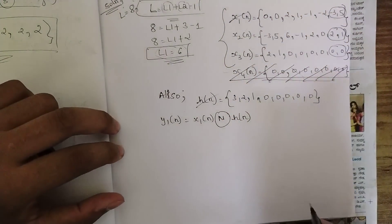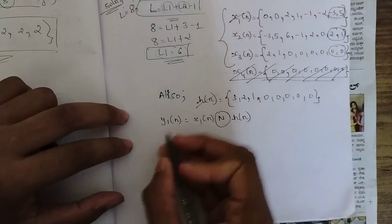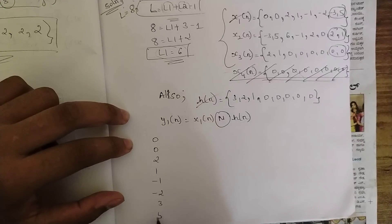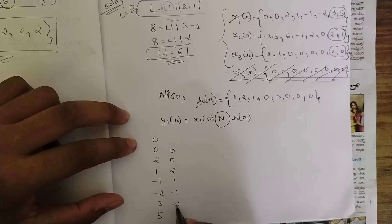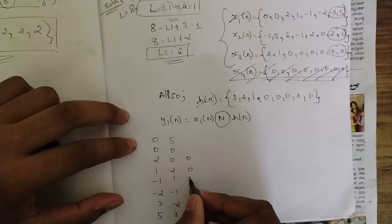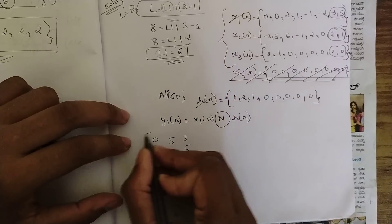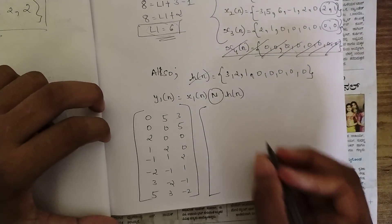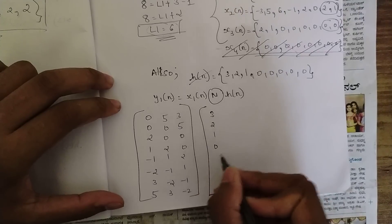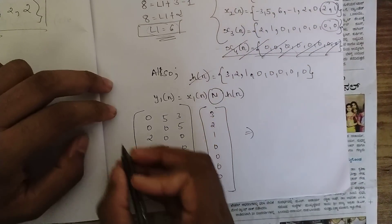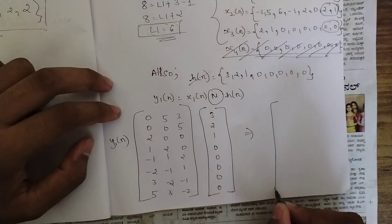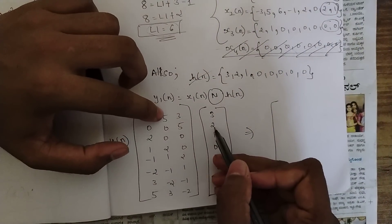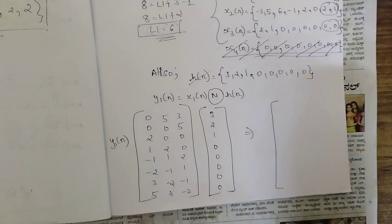For y1(n), write the sequence x1(n) = {0, 0, 2, 1, -1, -2, 3, 5} and h(n) = {3, 2, 1, 0, 0, 0, 0, 0}. Setting up the circular convolution matrix, the first value is: 3×0 + 2×5 + 1×3 = 0 + 10 + 3 = 13... then continuing the matrix multiplication to get 7 as the next result.